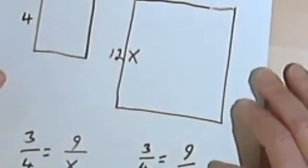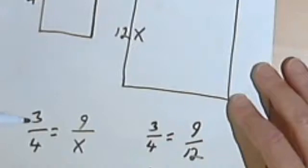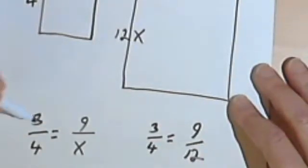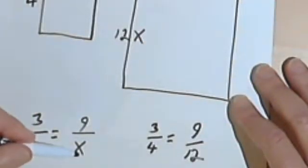Now remember, when you set up a proportion like this, you want to make sure that you're comparing the same things. In other words, in this case, I've got a width on the top of my fraction, a width as a numerator, and a width as a numerator, and then a height as a denominator, and a height as a denominator. Let's look at another one.